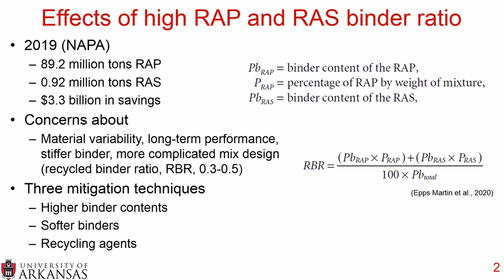There are three mitigation techniques available when using high RAP and RAS binder ratios. That includes simply increasing the overall asphalt binder content, using softer binders when adding to the RAP and RAS, and also using recycling agents or chemical additives.